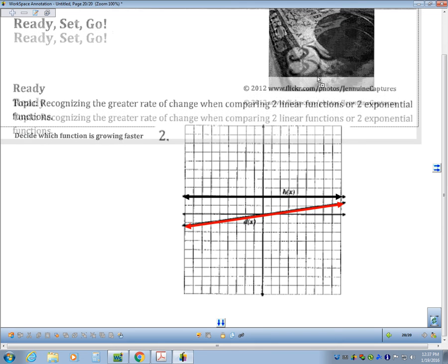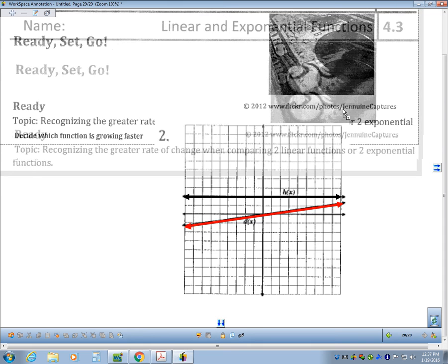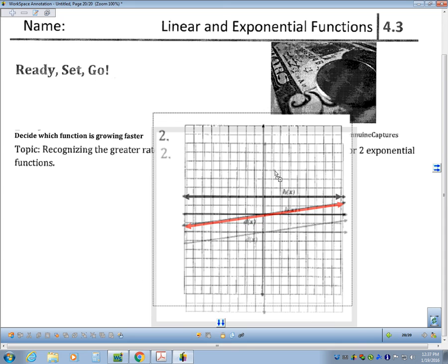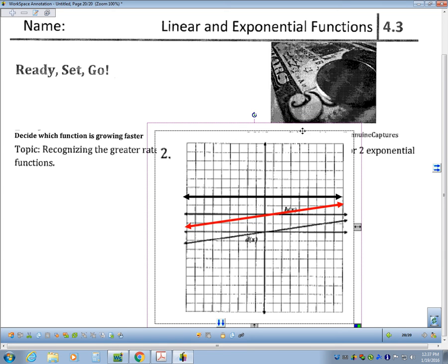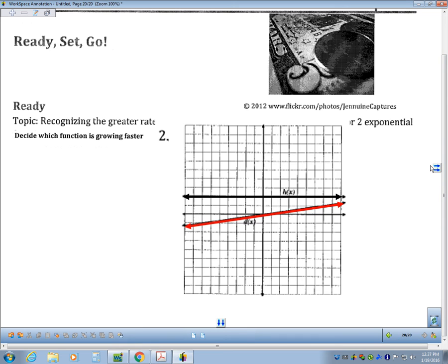So this is section 4.3, scroll down here, 4.3, and our goal is to recognize the greater rate of change when comparing two linear functions or two exponential functions.